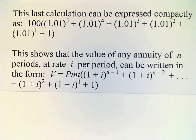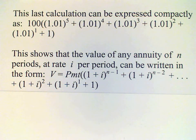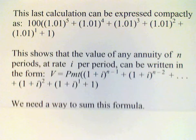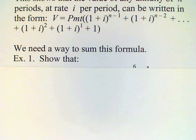The formula is: V equals the payment times (one plus i) to the (N minus one) plus (one plus i) to the (N minus two), and so on down to (one plus i) squared plus (one plus i) plus one. In order to make this formula useful we need to be able to sum it.